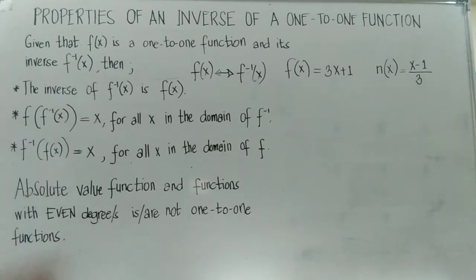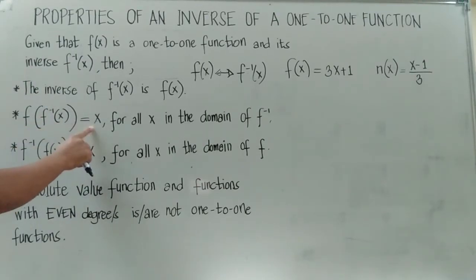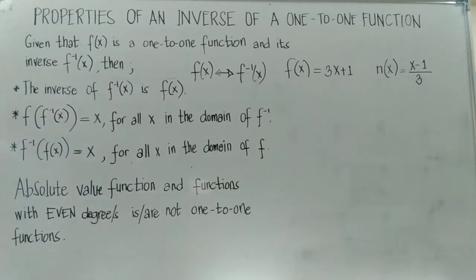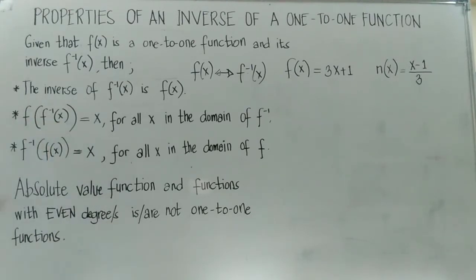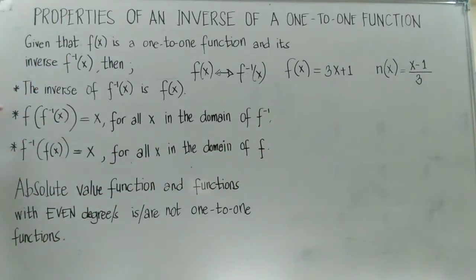Property number two: the composition of the inverse of a function to its function equals x for all x in the domain of the inverse of f. Also, the composition of the function to its inverse equals x for all x in the domain of f. We will use these two properties to check whether two given functions are inverses of each other.